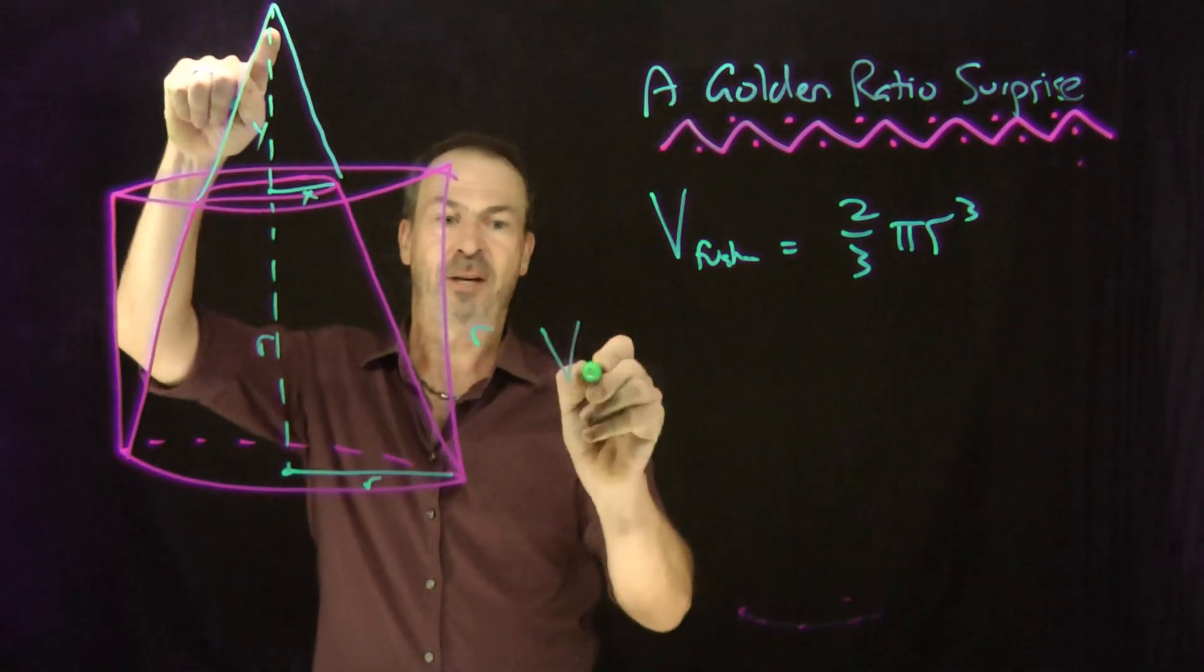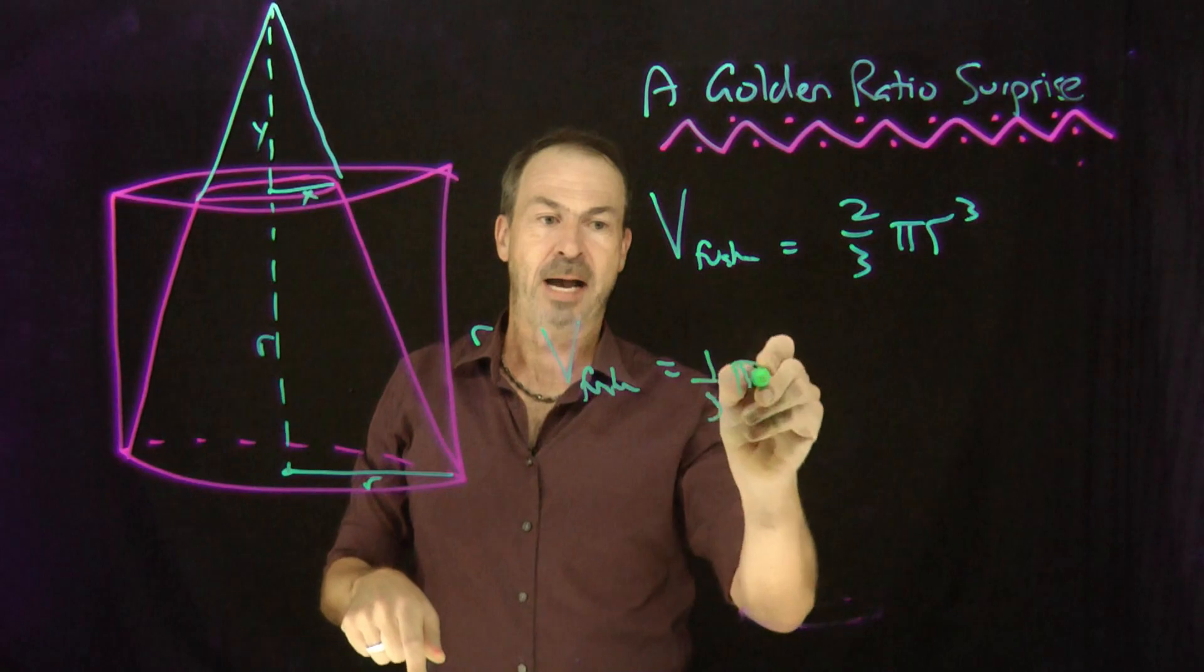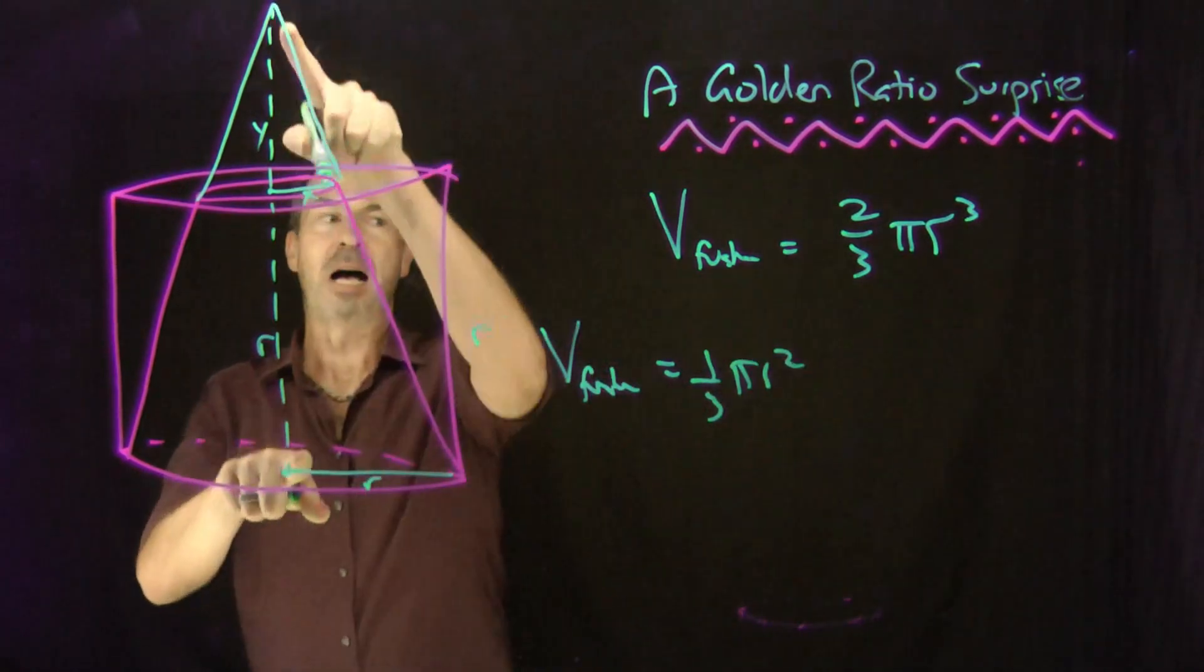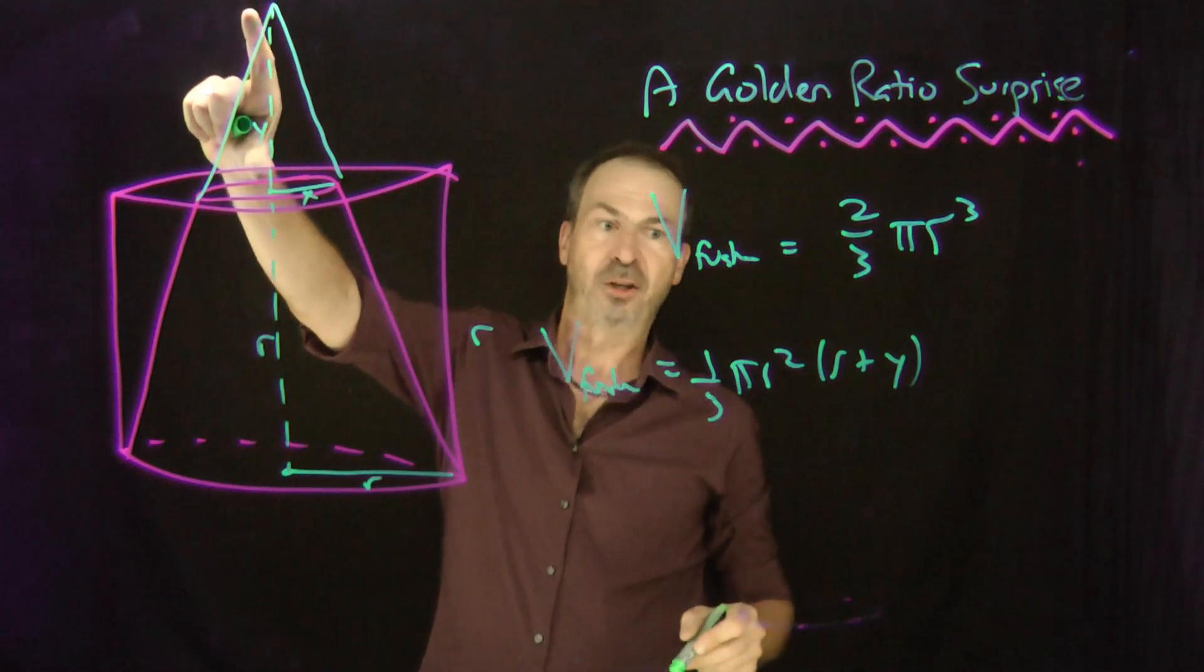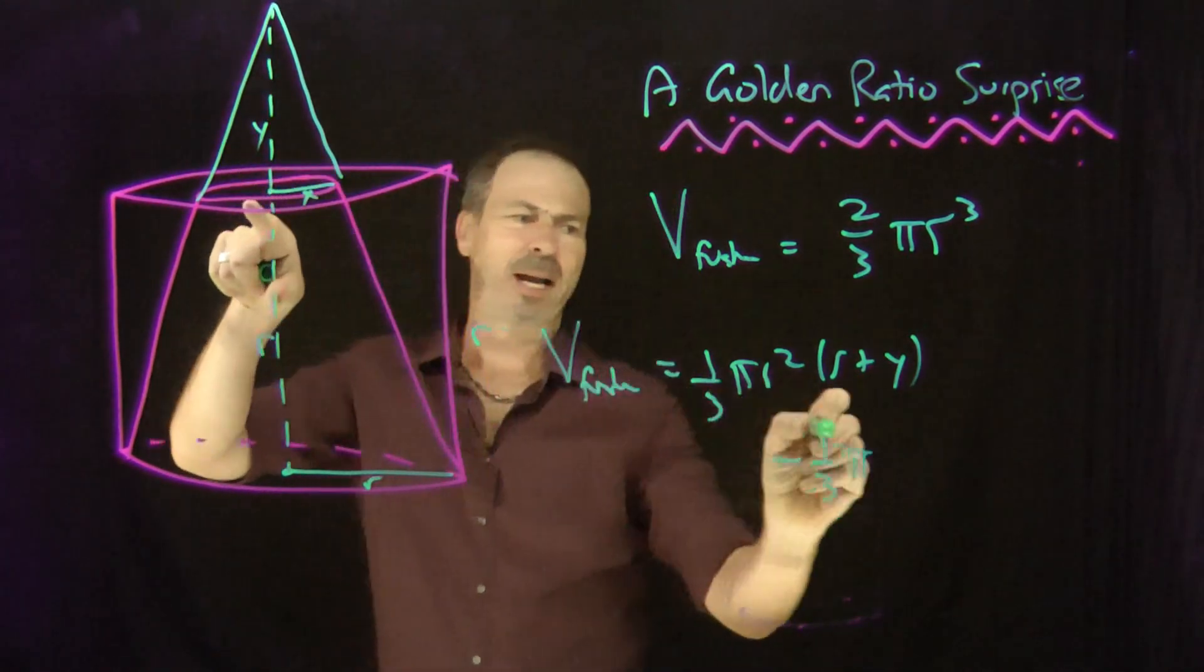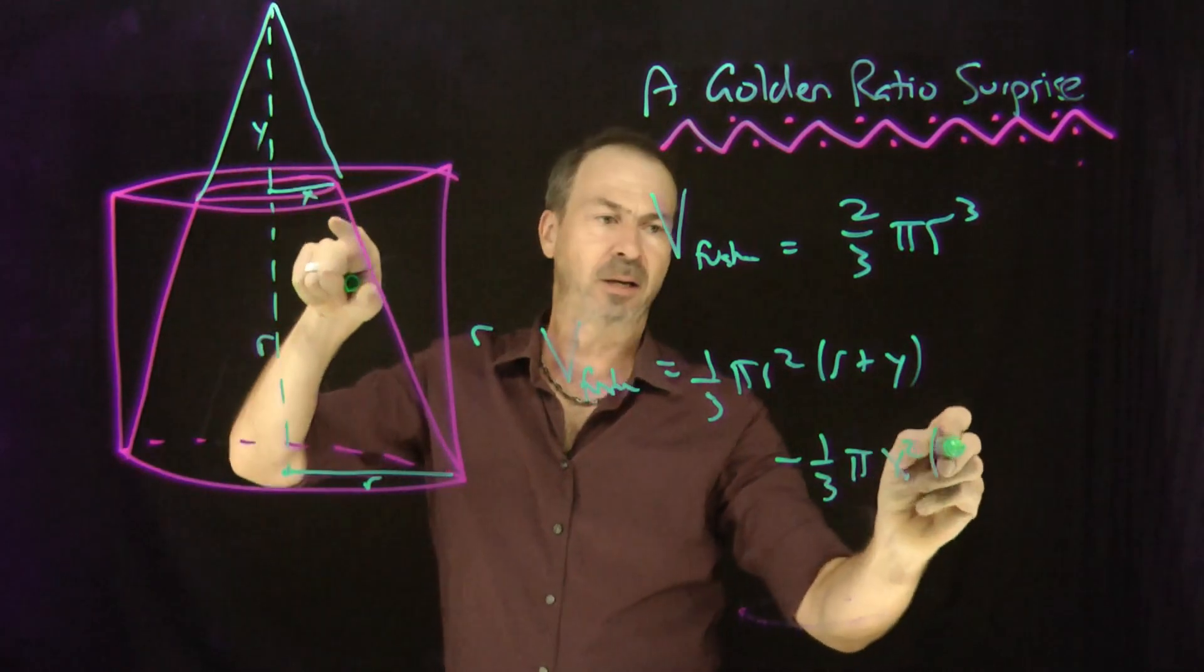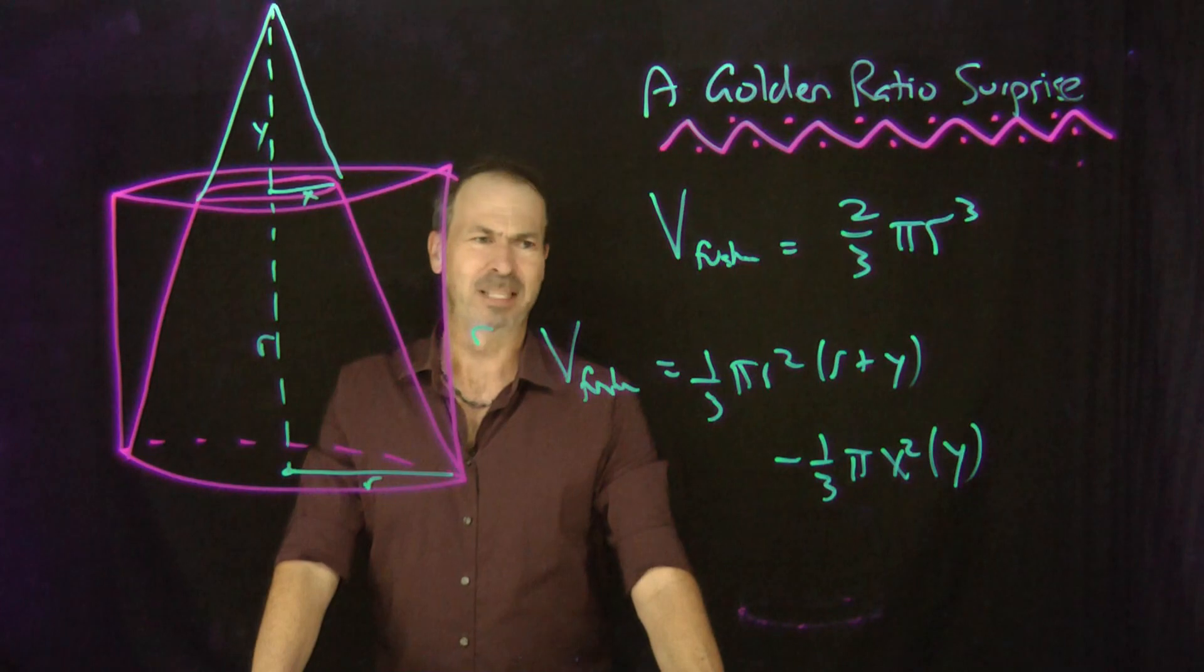The volume of the frustum would actually be the full cone, one-third pi r squared, its full height, r plus y, minus the volume of the top part, minus one-third pi, ooh, pi x squared, pi x squared times its height, y. Ooh, that's going to be a messy formula. That's a messy formula.